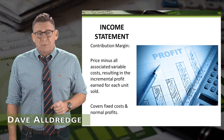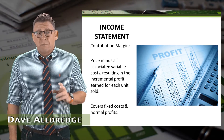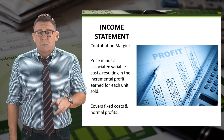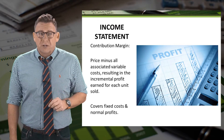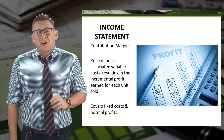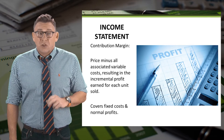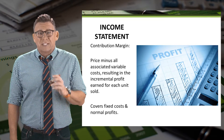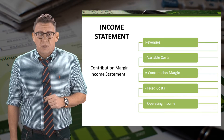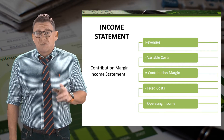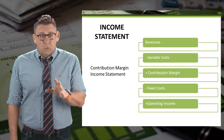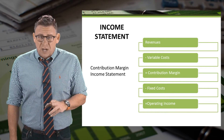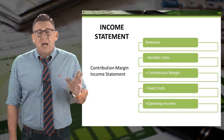The contribution margin income statement is used for many internal decisions. This is because costs are grouped by behavior rather than function, and that provides better internal information. The contribution margin itself is revenues minus variable costs. The full income statement is revenues minus variable costs equals contribution margin, from which we subtract fixed costs to get operating income.